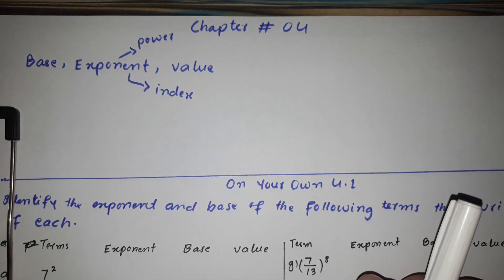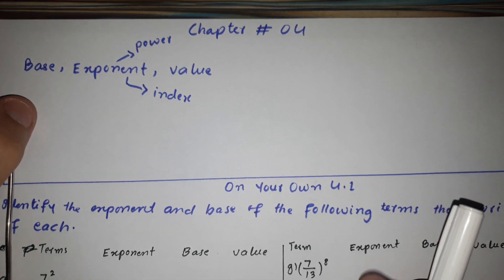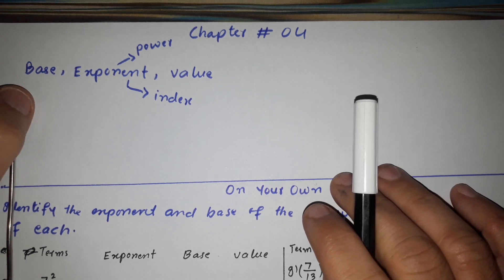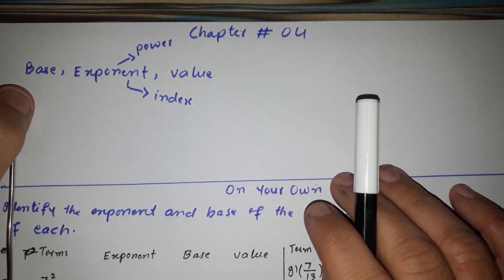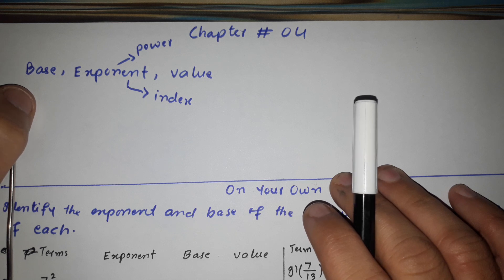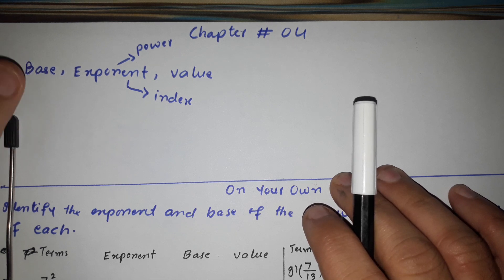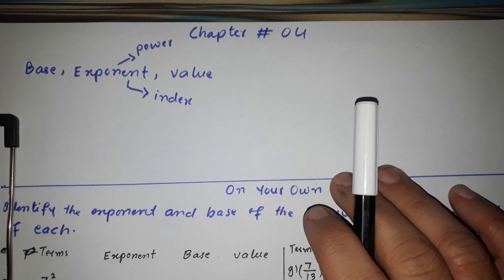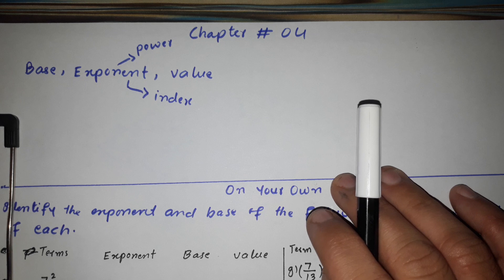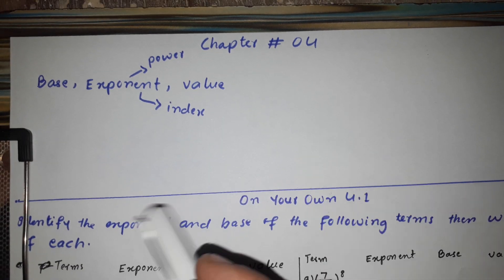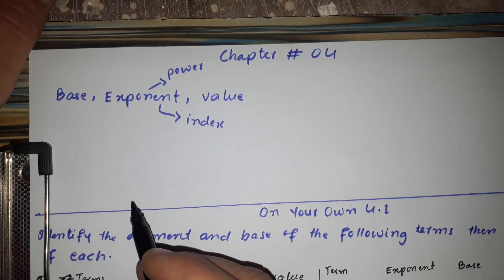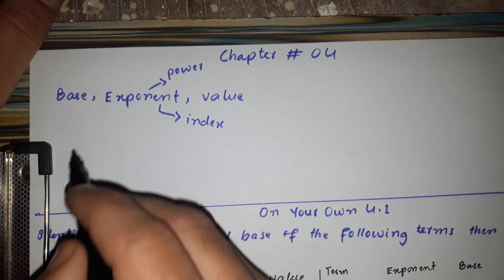Bismillahirrahmanirrahim. Now we will start Chapter 4 of Class 7 Mathematics — a function series. Let's see if we have some terms. This is the best exponent and value. Now let's see if we have an example.